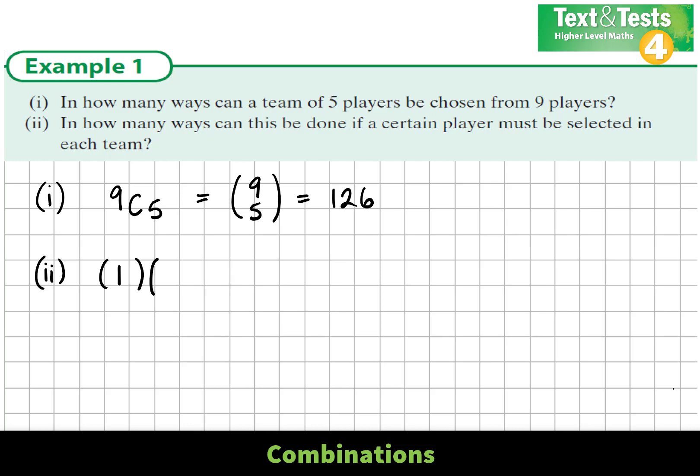And I multiply that by the other players. So the other players are out of 8, I'm choosing 4. So 1 times 8 choose 4, which is simply 8 choose 4.